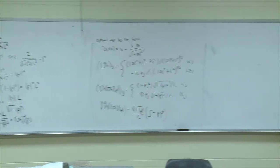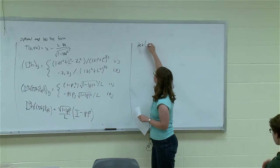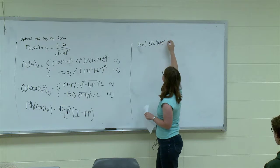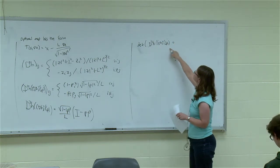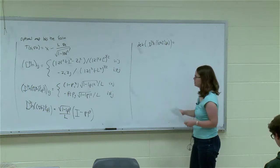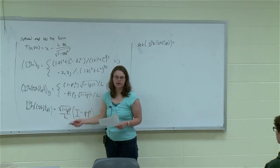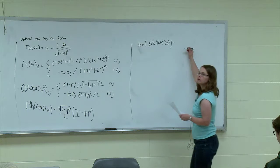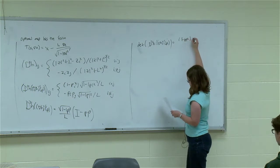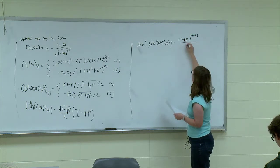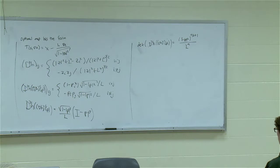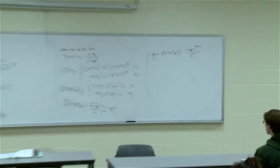The determinant of this thing ends up having a simple form. The determinant of the Hessian of h evaluated at grad h inverse of p is equal to: all of this gets raised to the nth power — it's multiplying every row — and then you just have the determinant of this guy, which ends up being 1 minus p squared. So we end up with 1 minus p squared to the n over 2 plus 1, divided by L to the n. And that's basically it — those are the terms we have to calculate.